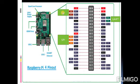I2C pins are SDA and SCL — serial data and serial clock. SPI pins are MOSI (master-out slave-in), MISO (master-in slave-out), and SCK (serial clock). UART pins are transmit and receive. The remaining pins are general-purpose digital power supply pins.